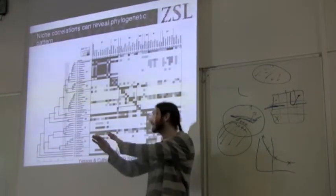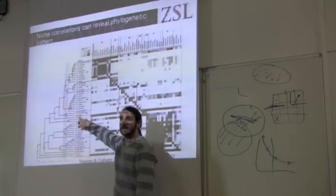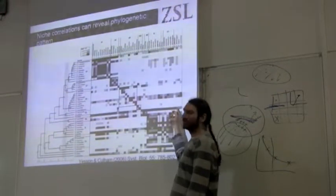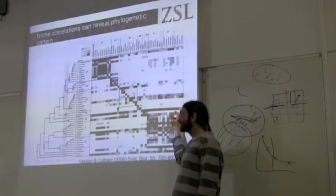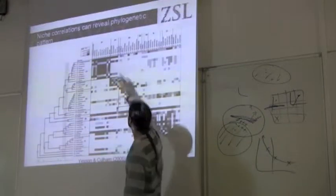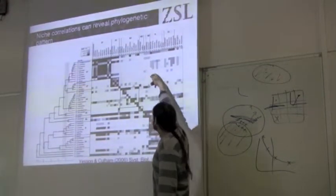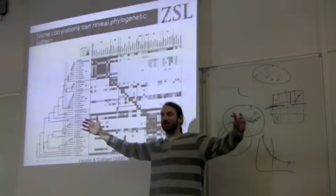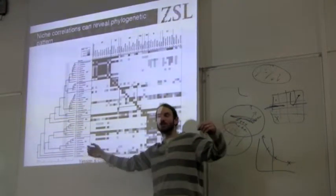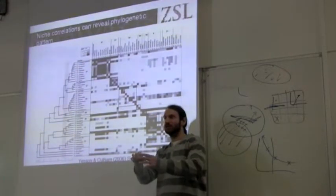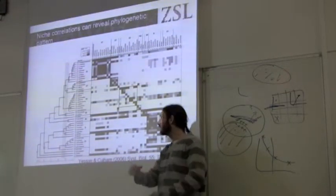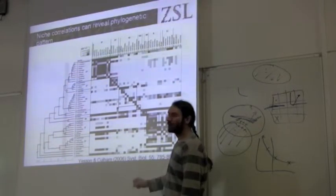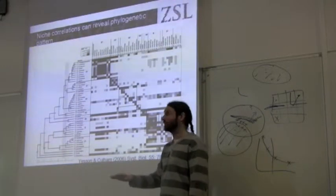This measure takes the occurrence points of the two species and looks at how well the model for one species predicts the points of the other species — so you have a non-symmetric test. Drosera indica has an incredibly wide range, so it completely encompasses the range of most other species. But the restricted range species can't predict very many of the points of the other. So it's a non-symmetric measure, but it shows niche similarity that is different from D and I.